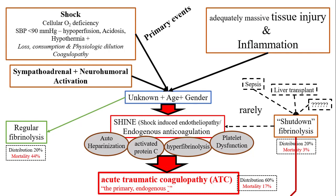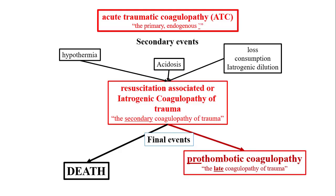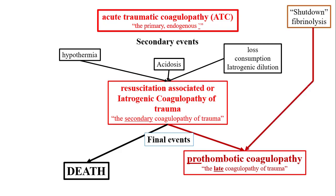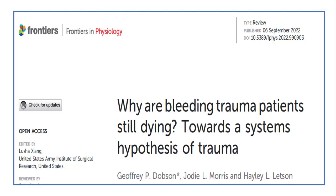As secondary events, you have the lethal triad we discussed, leading to the secondary coagulopathy of trauma — the resuscitation-associated or hypotonic coagulopathy. To prevent this, I suggest preventing dilution by giving FFP rather than crystalloids. The final event is the late coagulopathy of trauma, which is part of shutdown fibrinolysis — where fibrinolysis simply stops.